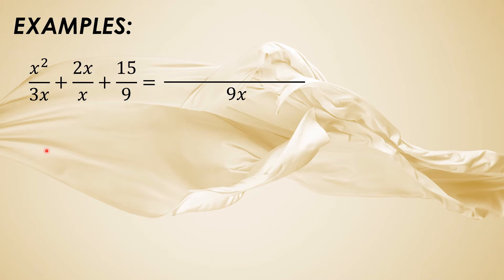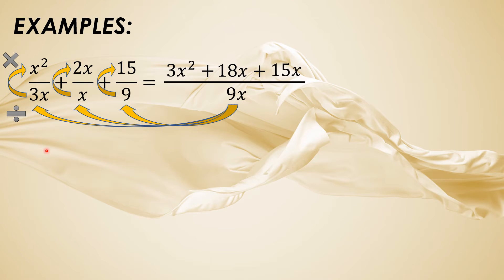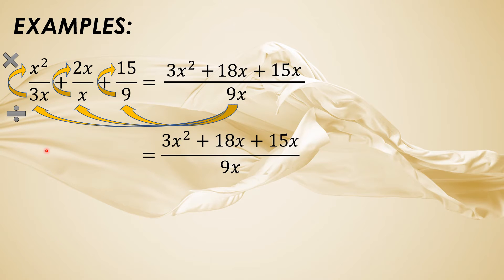Then let us divide 9x by 3x. 9x divided by 3x is 3. Then 3 times x squared is 3x squared. 9x divided by x is 9, times 2x is 18x. 9x divided by 9 is 1x, times 15 is 15x. Let us rewrite this resulting expression: 3x squared plus 18x plus 15x over 9x.